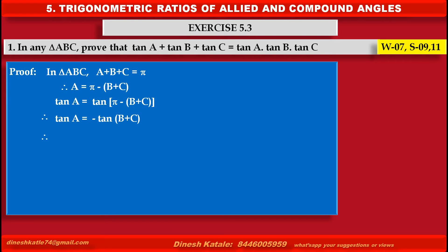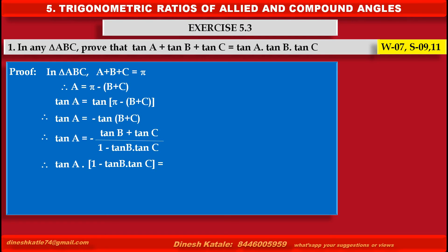Therefore, by applying the tan addition formula on the right hand side, we get tan A is equal to minus (tan B plus tan C) upon (1 minus tan B tan C). Therefore, by cross multiplication, we get tan A into (1 minus tan B tan C) is equal to minus tan B minus tan C.